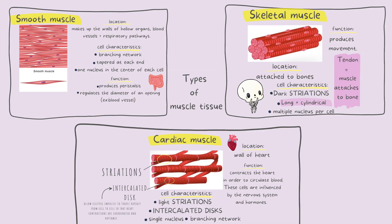One last super important thing: remember voluntary movement and involuntary movement. Involuntary means you have no conscious control over it — for example, you would have no control over your breathing or your heart beating. Smooth and cardiac muscle are both involuntary. Skeletal muscle is the only voluntary muscle tissue.